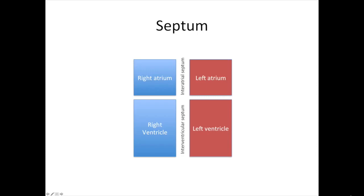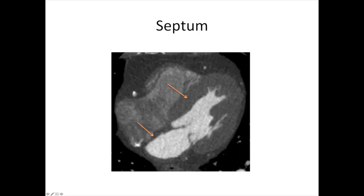Last but not least, we've got the septum. This is the structure between the atrium on one side and the atrium on the other, or the ventricle on one side and the ventricle on the other. The part between the atria is called the interatrial septum, and the part between the ventricles is called the interventricular septum. On our four-chamber view, between the atria we've got the interatrial septum, and between the ventricles we've got the interventricular septum. This is really important because if you get gaps in either septum, you get a ventricular septal defect or an atrial septal defect, which can go on to cause problems.